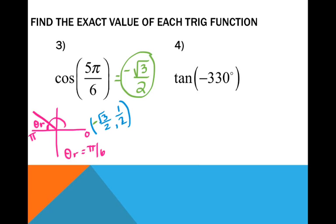Checking in the calculator, I type in cosine of 5 pi over 6, which gives negative 0.866. And negative square root of 3 divided by 2 is indeed negative 0.866.